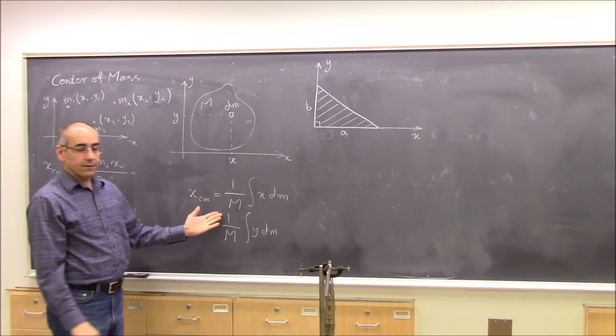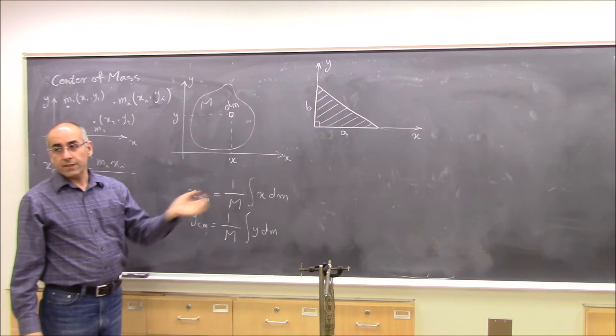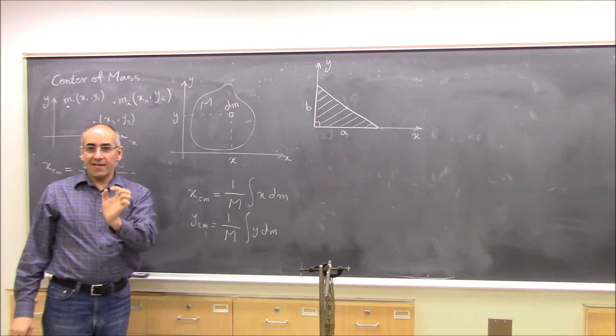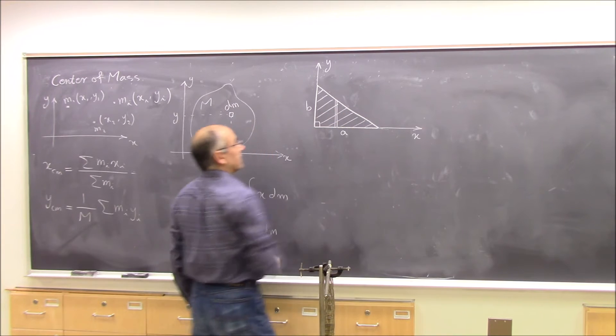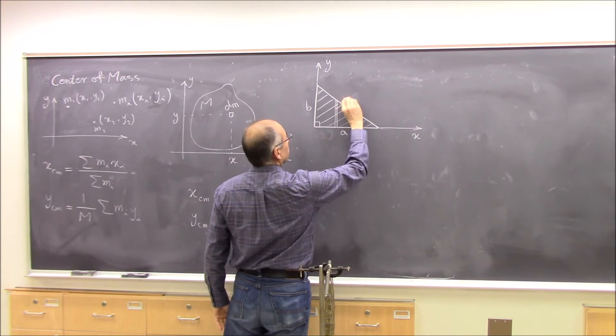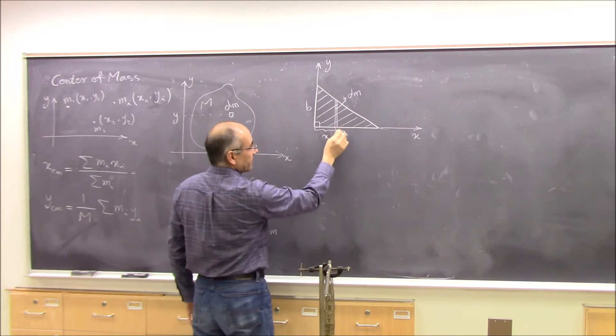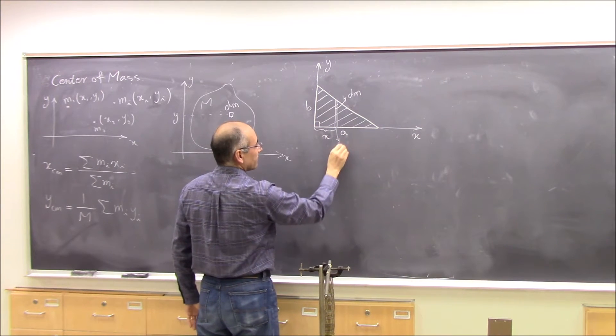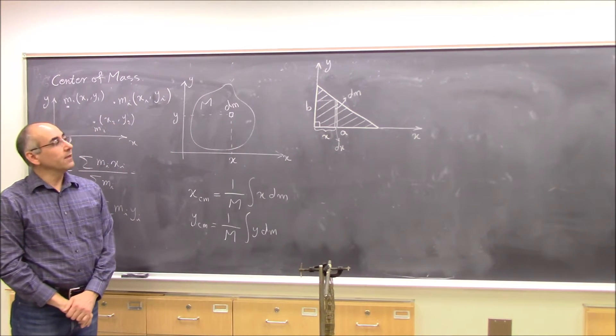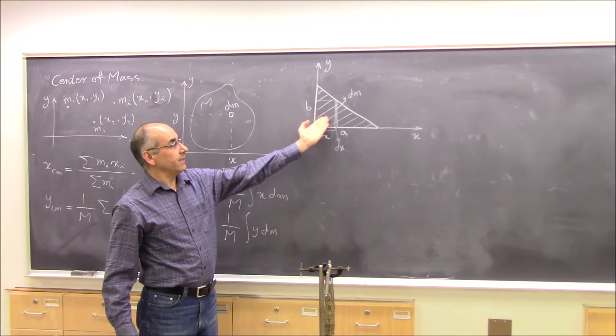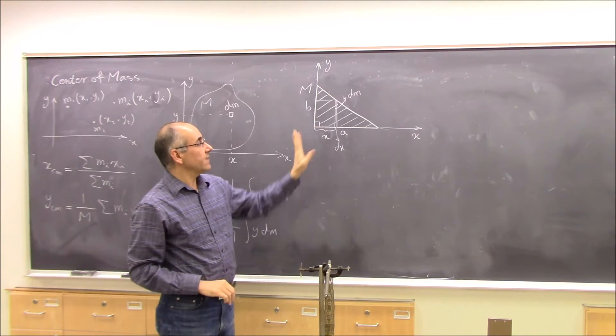And then you want to apply these formulas. Let's find x of center of mass. For that, you need to use an element of mass, then all of that element has the same x. So the biggest you can get is like this, this element like this. This is your dm, and it is at distance x here, and has a thickness dx. This thickness is dx, and the height of it is y. And then you need to calculate this dm. Let's say this plate has total mass M.